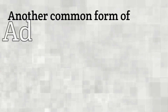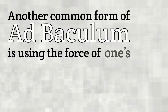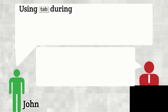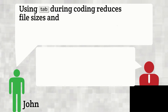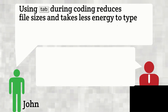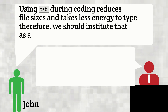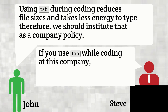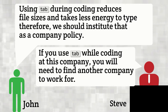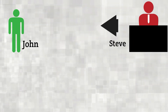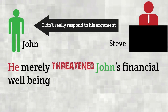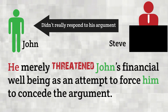Another common form of ad baculum is using the force of one's authority or position to force an opponent to concede. John argues that using tabs during coding reduces file sizes and takes less energy to type, therefore we should institute that as a company policy. Steve, John's boss, responds: 'If you use tabs while coding at this company, you will need to find another company to work for.' Steve didn't really respond to John's argument; he merely threatened John's financial well-being as an attempt to force him to concede.